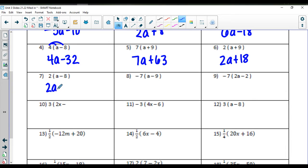Number seven is two a minus sixteen. For number eight, we have negative seven a plus sixty-three. For number nine, we have negative fourteen a plus fourteen.